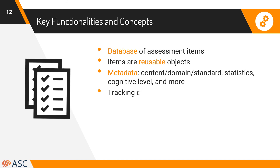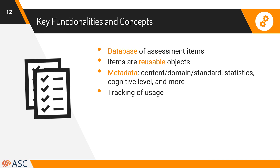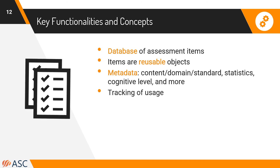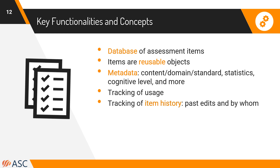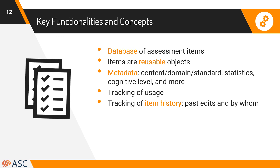It's also going to be tracking usage — for example, if your organization has four test forms per year, knowing that an item was used on form A and form C in 2019, form B in 2020, and forms C and D in 2022. It's important to have such things automatically tracked so that years down the line you know how often an item has been used and whether it should be retired. You're also going to track the item history itself, such as past edits and by whom, so you know if somebody came in and changed the item or its statistics.